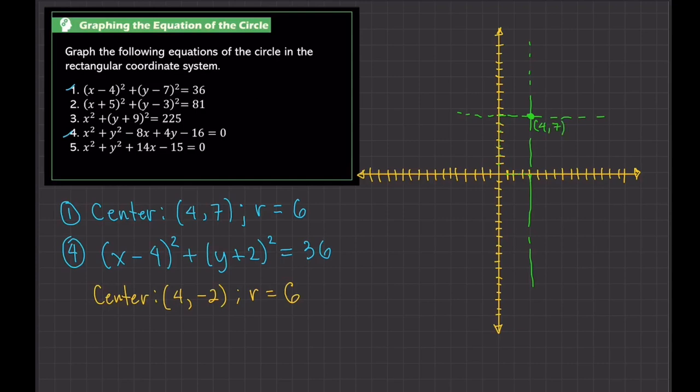Our radius is 6, so we're just going to count 6 units from the center in all directions. 1, 2, 3, 4, 5, 6. 1, 2, 3, 4, 5, 6. 1, 2, 3, 4, 5, 6.